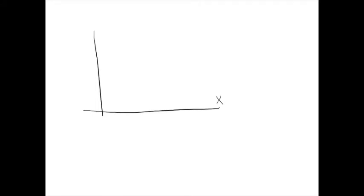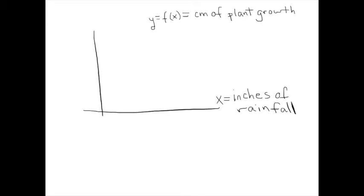Let's go back to a simple example from the first couple days of class. The x-axis will represent inches of rainfall, and the y-axis will represent centimeters of plant growth. If there's no rainfall at all, there will be no plant growth. But as the rainfall increases, so will the plant growth. At a certain point, the plants will get saturated, and if it rains too much, the plants won't like it very much, and they'll die out.